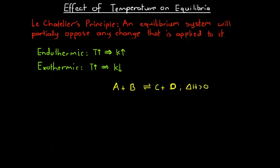How does changing the temperature of a mixture of substances affect the equilibrium of those substances? We know that if we have an endothermic reaction and we increase the temperature, that will increase the equilibrium constant. And if we have an exothermic reaction and we increase the temperature, that will cause a decrease in the equilibrium constant. But we can actually explain this phenomenon using Le Chatelier's principle.